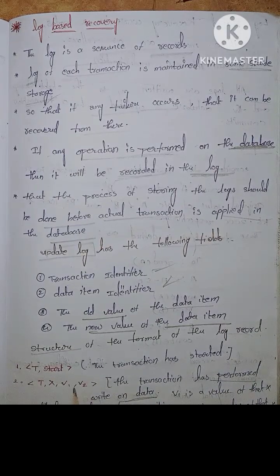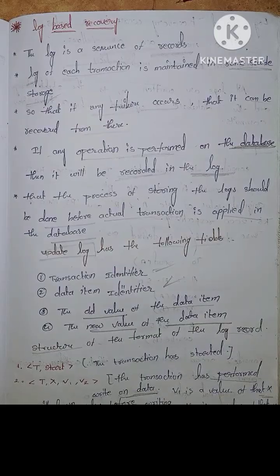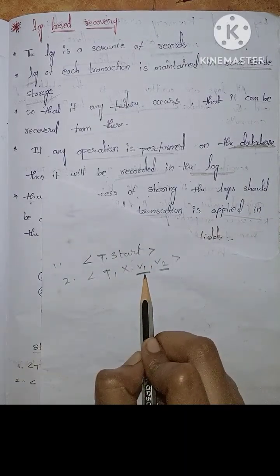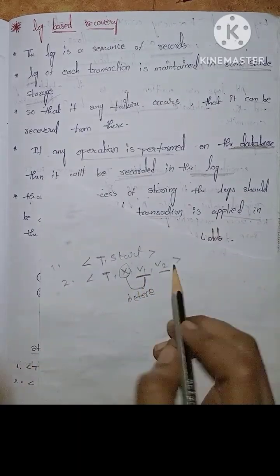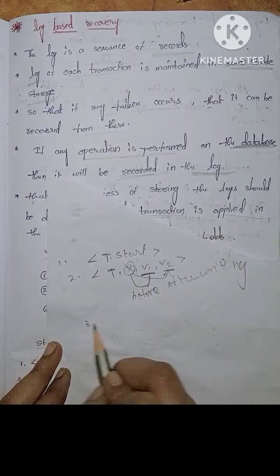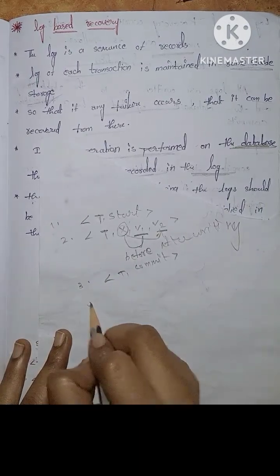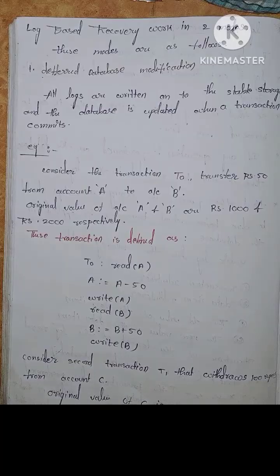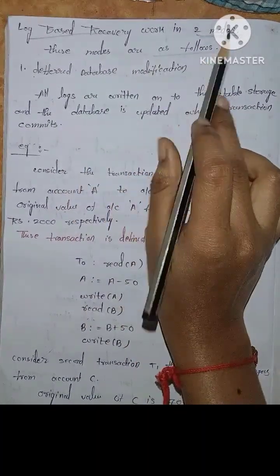For a write operation: v1 is the value that x will have before writing, and v2 is the value that x will have after the writing operation. For transaction start, we record T-start; for commit, T-commit meaning the transaction has committed; and T-abort meaning the transaction has aborted.